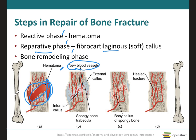In areas closer to well-vascularized healthy bone tissue, osteoprogenitor cells develop into osteoblasts, which produce spongy bone trabeculae. These trabeculae join the living and dead portions of the original bone fragments, creating a bridge. Eventually, the fibrocartilage is converted to spongy bone, and the callus is then referred to as a bony callus or hard callus, which lasts about three to four weeks.